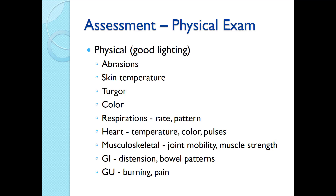We always need to make sure that we're doing a good physical assessment on the patient with good lighting in the room so you can get a good visual of the skin's condition. Do they have any abrasions? Do they have a nice warm skin temperature, or are there cold skin areas? Skin turgor tells us about the hydration status of the skin. Is the color normal for their race and ethnicity? Do they get short of breath, or do they have a normal respiratory rate and pattern? Do they get a really high heart rate with activity? How are their pulses in the extremities — do they have good blood flow?